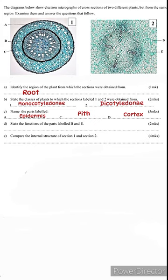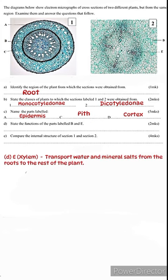Moving on: state the functions of the parts labeled B and E. Let's start with the easier one, E. E, as already mentioned, is the xylem. So the function of the xylem is to transport water and mineral salts from the roots to the rest of the plants. Some students tend to confuse the two terms 'transport' and 'absorption.' The xylem does not absorb water and mineral salts; that is the function of the root hair cells. The xylem transports the absorbed water and mineral salts to the rest of the plant.